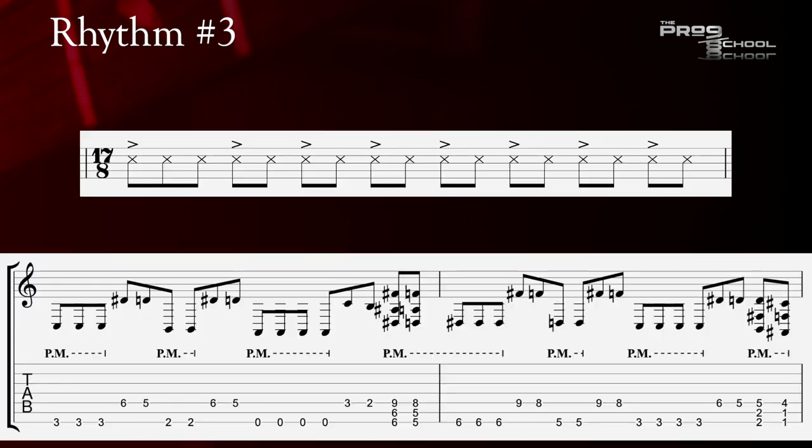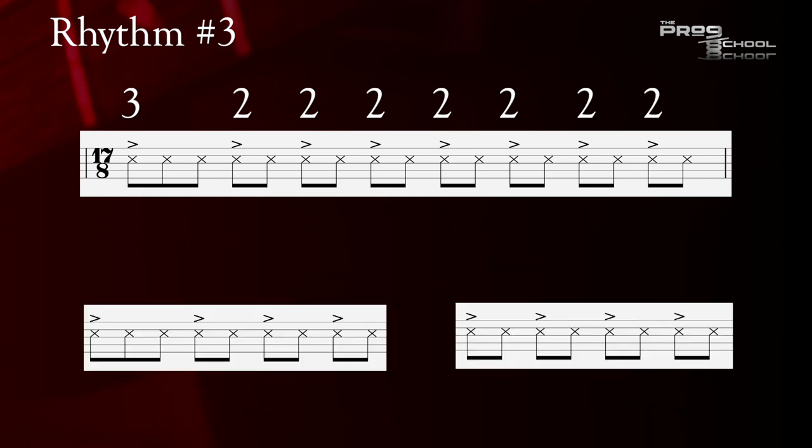Here's rhythm number three. This one is divided as 3-2-2-2-2-2-2-2, or you could count it as 5-4-4-4. This is meant to feel like two bars of 4/4 with an extended first beat in the first measure. If you think of each of the threes and twos as one beat, you'd have a bar of 9/8 and a bar of 4/4. Treating an odd time signature like a common time signature can make it feel more natural to the listener. It worked here to make 17/8 a little more digestible.